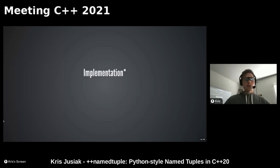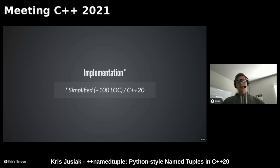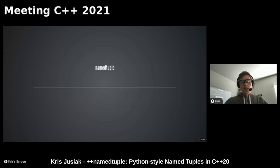I'll just quickly check if there are any outstanding questions. I don't see any super important ones besides an echo in the beginning - sorry about that. Let's take a look at the implementation. It's simplified C++20 - around 100 lines of code using a few C++20 features which are super fun.